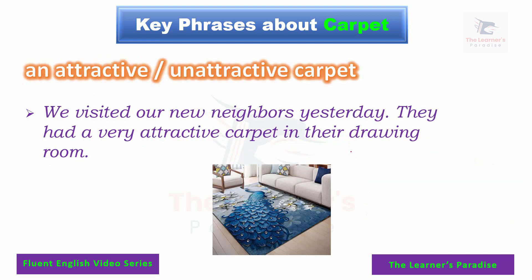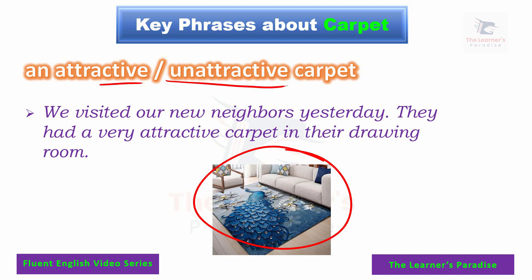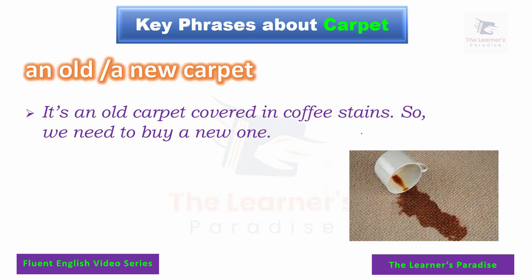Next, we have attractive or unattractive carpet. An attractive carpet is very pleasant for your eyes — you want to look at it. An unattractive carpet is one that is not in good condition; maybe it is very old or worn out. Example sentence: we visited our new neighbors yesterday and they had a very attractive carpet in their drawing room.